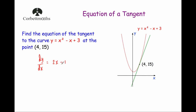So if we want to find the gradient of the curve at the particular point (4, 15), we're going to substitute the x value, the 4, into this gradient function. So when x equals 4, dy by dx — the gradient of the curve and therefore the gradient of the tangent — will equal 2 times 4 minus 1, which is 7. So the gradient of the tangent at the point (4, 15) will be 7, giving us y equals 7x plus c.